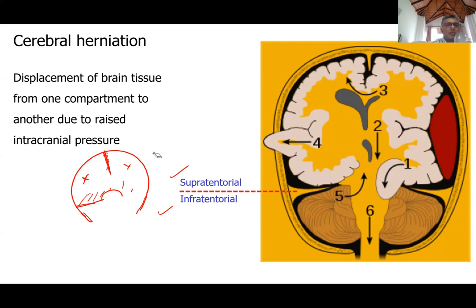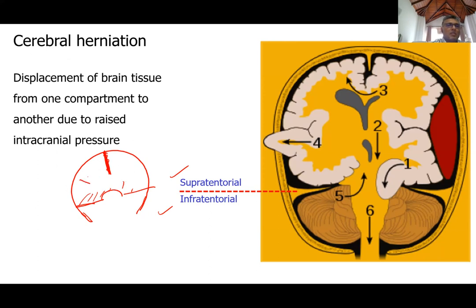When pressure increases above the tentorium cerebelli, brain tissue can herniate through the tentorial opening from above downward into the posterior cranial fossa — this is transtentorial herniation. If pressure develops on one side, the brain tends to herniate under the falx cerebri to the opposite side — this is subfalcine herniation. At final stages if untreated, pressure forces cerebellar tonsils down through the foramen magnum — transforaminal herniation.